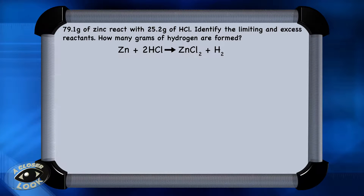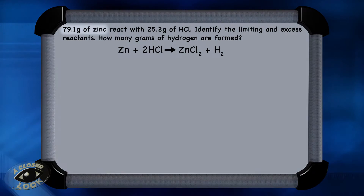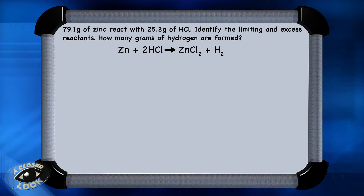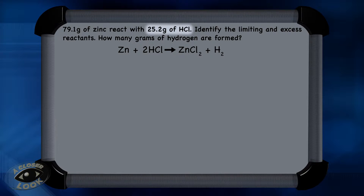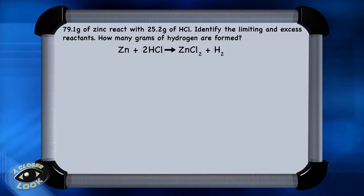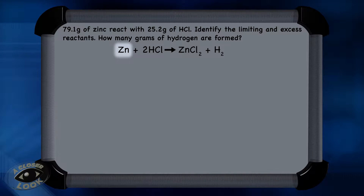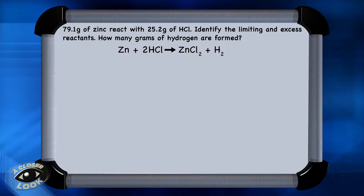Now, let's take a look at an example of a limiting reactant problem in which we want to figure out the theoretical yield of hydrogen gas that could be produced from 79.1 grams of zinc added to 25.2 grams of HCl. The balanced equation for the reaction is: one mole of zinc reacts with two moles of hydrochloric acid to produce one mole of zinc chloride and one mole of hydrogen gas.